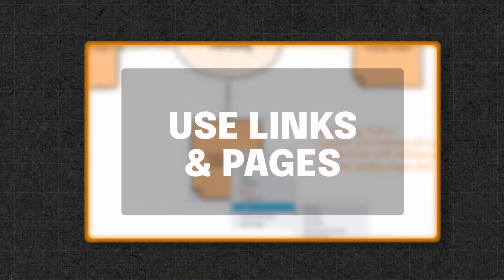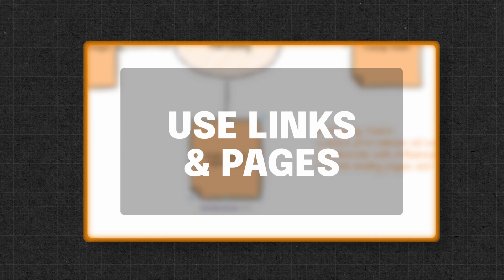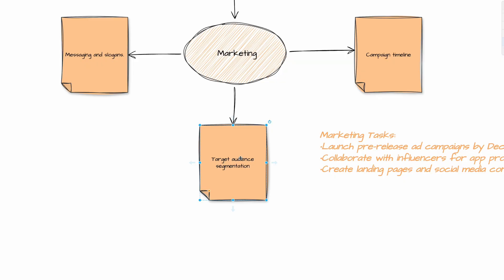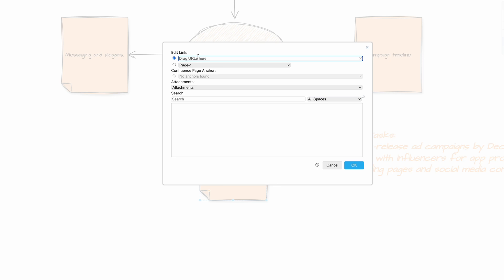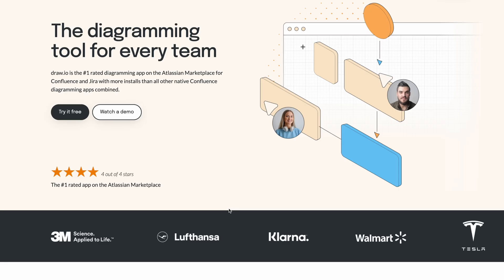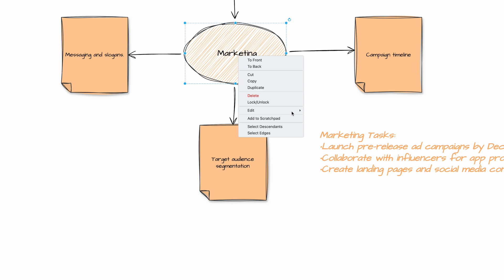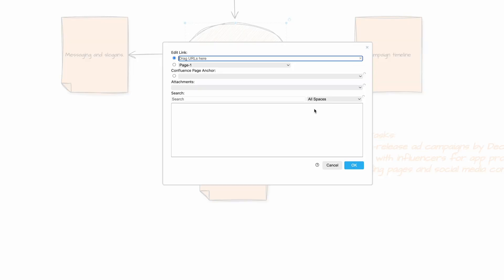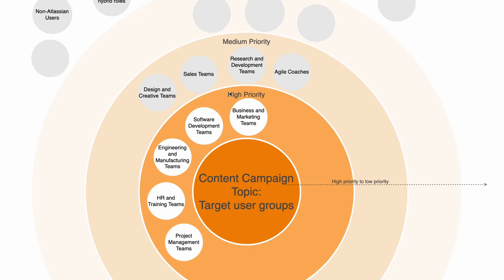In Draw.io, you can enhance your brainstorming session by adding references, embedded media, and creating multiple pages. This will improve the depth and usability of your brainstorming documentation. For instance, if a concept refers to an external source or a different part of your project, you can link shapes to reference those. You can embed links to external websites, internal Confluence pages, or specific headers and different pages within your diagram. If you're brainstorming a marketing strategy, you can embed links to market research reports, competitor websites, or relevant articles directly in your diagram.